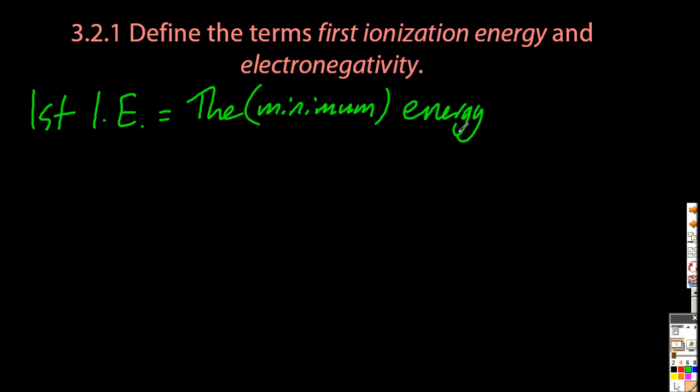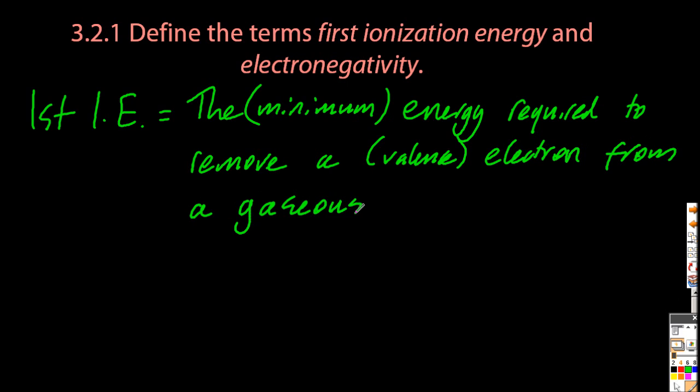Let's start by defining the first ionization energy. It's the minimum energy required to remove an electron from a gaseous atom, leaving behind a gaseous ion. And if you don't put gaseous both times, you won't get the point.